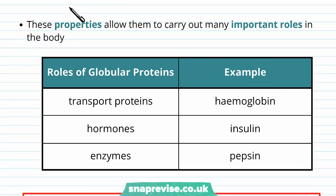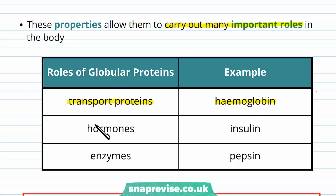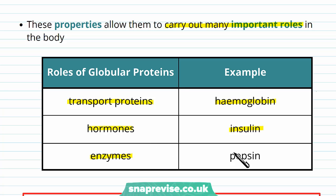All of these properties allow globular proteins to carry out many important roles in the body, including transport. Some proteins are transport proteins, for example haemoglobin. Some globular proteins are hormones flowing through and dissolved in the blood plasma, for example insulin. And some are enzymes dissolved in cells or the cellular environment, and one example of that is pepsin — we'll be going through all of these.